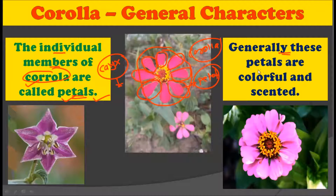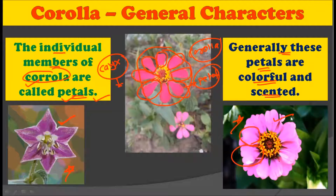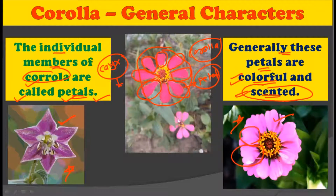Generally, petals are colorful and scented. In most cases, the corolla is the very bright colored part of a flower. You can observe in the picture that the corolla has different shapes and colors, and a great variety of color is present. Often these corollas are scented in nature — that is, they give out a very pleasant smell. So in most cases, petals are colorful and scented.